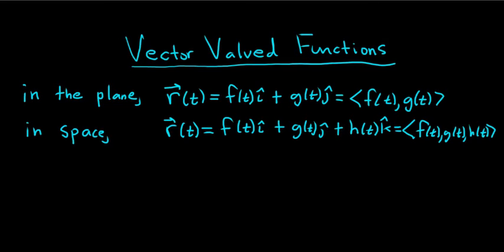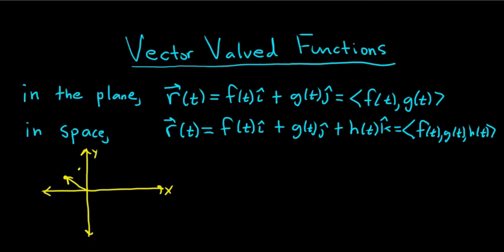Let's look at some pictures so you see what I mean. In the xy-plane, we have the x-axis and the y-axis. An example of a vector-valued function could have a first vector, a second vector, and a third vector. If you were to connect the dots, the endpoints of the vectors actually trace out a curve.